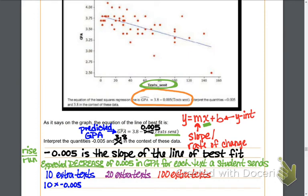And when I do that, I discover that their GPA goes down 0.05. So if a student had a 3.8 GPA and they sent an extra 10 texts, I would expect their GPA to go down to a 3.75.